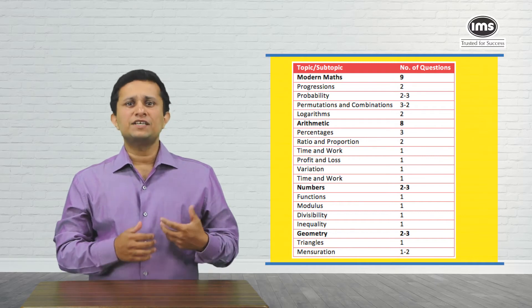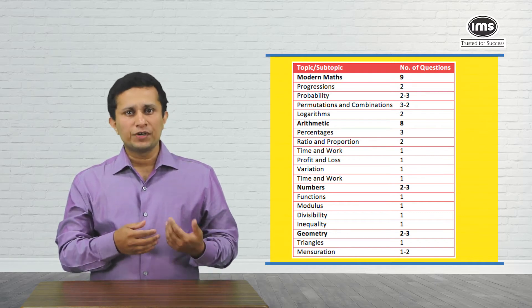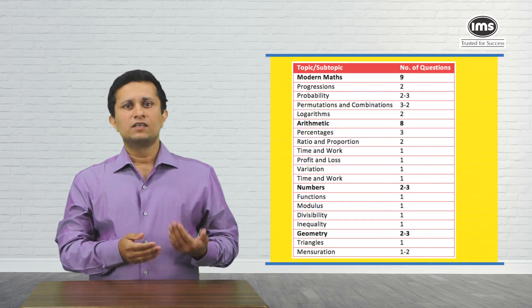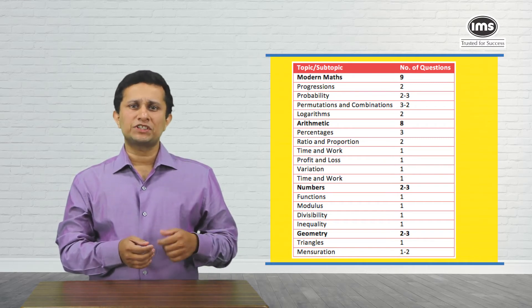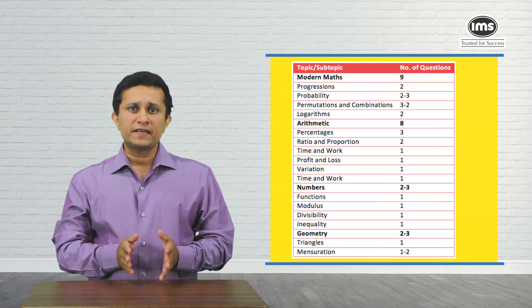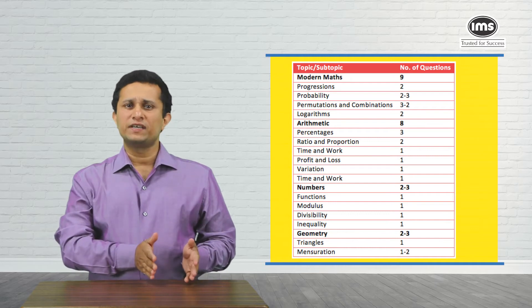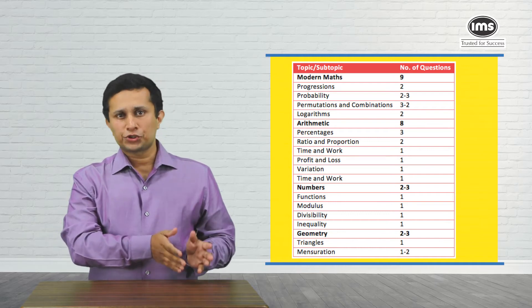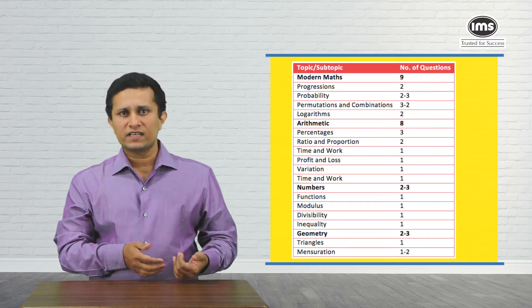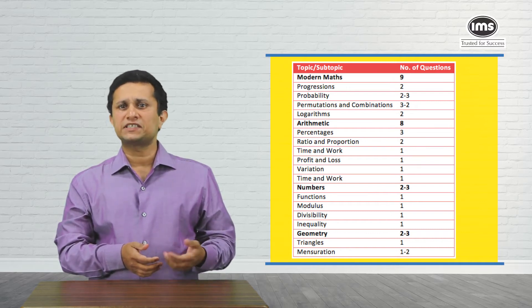Modern math included areas such as permutations and combinations, probability, APGP, logarithms, and a one-off question on sets which was also based on number theory. Arithmetic had the typical NMAT favorites such as ratio and proportion, time and work, time and distance, profit and loss, percentages, variation, etc.